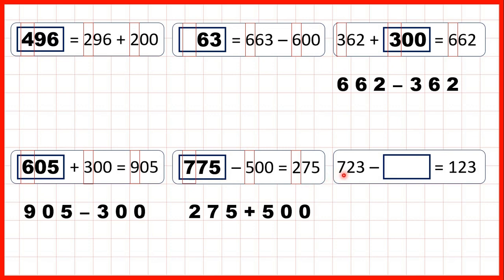And finally, 723 minus something equals 123. We can see that it's only the hundreds digit that has changed, so we know that our missing number must be a multiple of a hundred. Now this time, it's the second number in our subtraction that's missing.